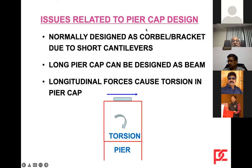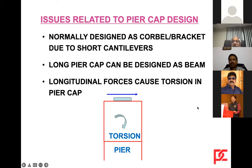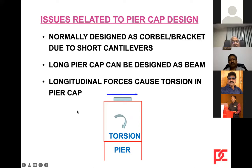Pier caps are normally designed as corbels or brackets due to the short cantilever. Long pier caps can be designed as cantilever beams, and if the span is very large, they can be designed as prestressed concrete pier caps. Longitudinal forces like braking and centrifugal forces cause torsion in the pier cap, which must also be accounted for.